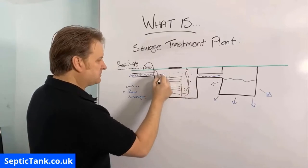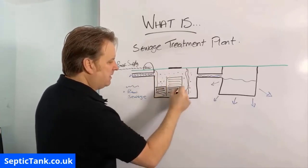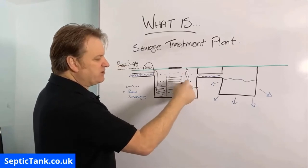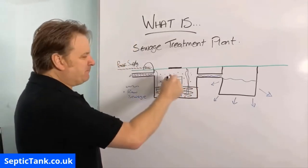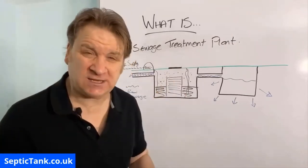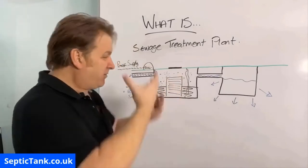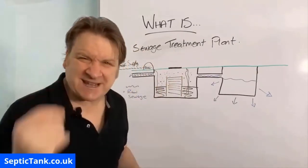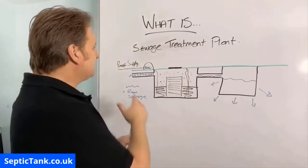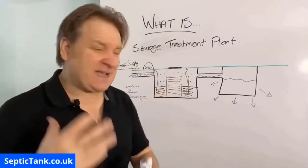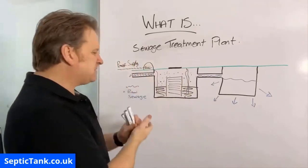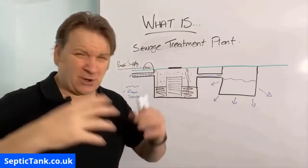Inside there's something called a hive with pipes coming up. Electricity goes to this hive and it produces lots of bubbles — it works like an aquarium, oxygenating the water. You've got two compartments: one where the poo, fat, grease, and sludge settle, and a secondary compartment. The blower oxygenates and cleans everything, so you've got raw sewage going in but clean water coming out. That's the difference between a sewage treatment plant and a septic tank.